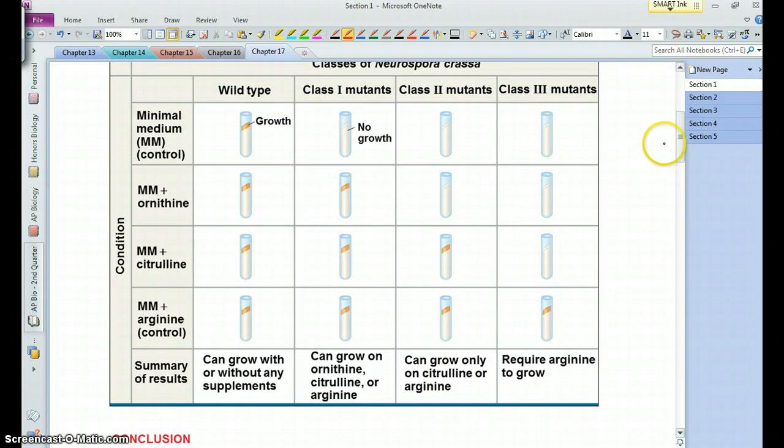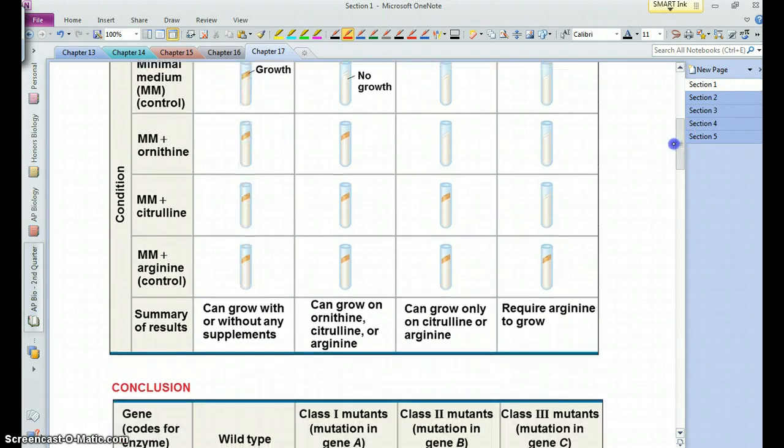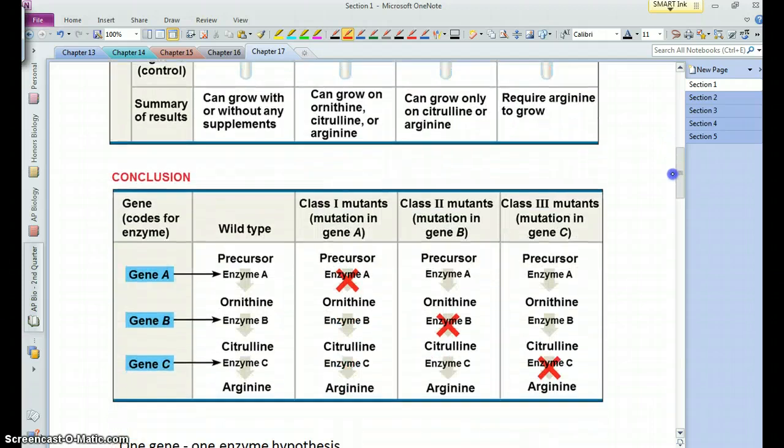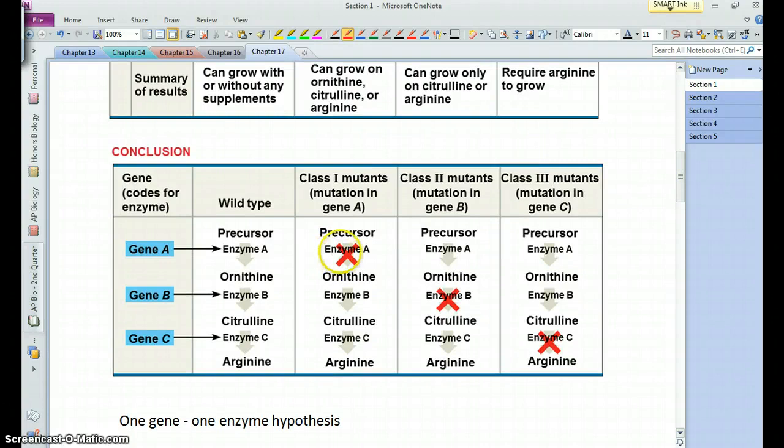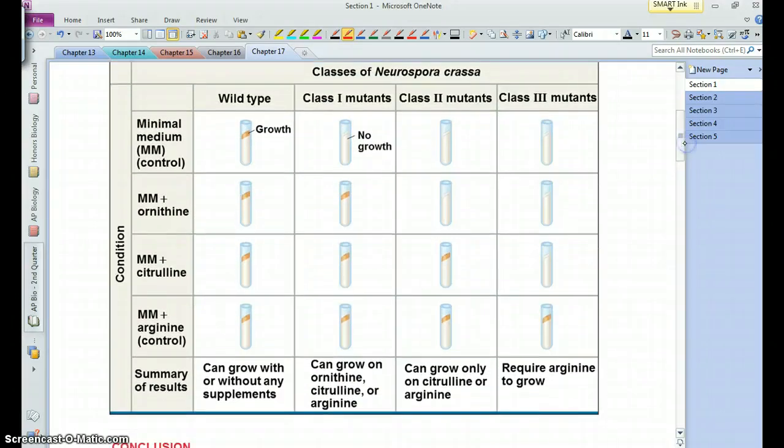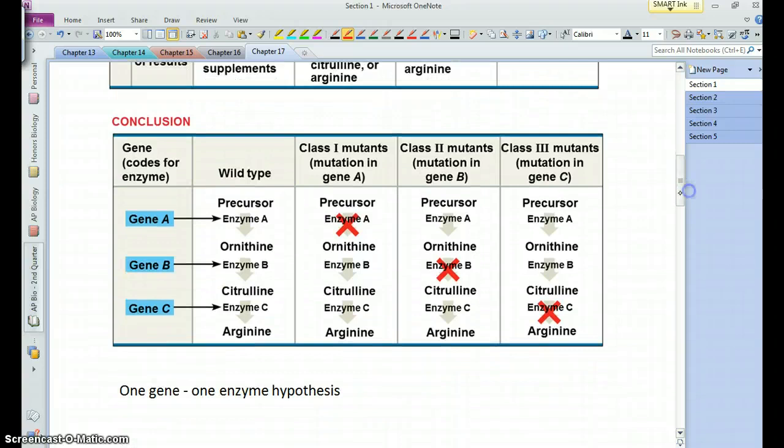So what they were able to demonstrate is that these mutants have a particular mutation of a particular gene which affects their ability to make enzymes. In the case of the class 1 mutants, it keeps them from converting the starting molecule into ornithine. The class 2 are missing the enzyme that allows them to convert ornithine into citrulline.